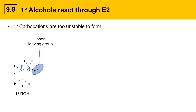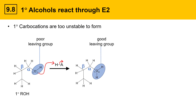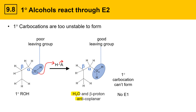The OH group is a poor leaving group; it won't leave on its own. When an acid is placed with this alcohol, the acid protonates it, converting it to a water species — a good leaving group. However, the water leaving group can't leave on its own because it would leave behind a primary carbocation, which is too unstable. So primary carbocations can't form, and therefore you don't get E1 mechanisms with primary alcohols. Instead, an E2 elimination occurs. One key with E2 is that the leaving group and the beta proton being abstracted must be anticoplanar, and as long as that geometry can be achieved, E2 can proceed.